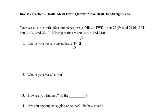Our forward drafts are 22.09 and 23.01. When we add those together we get 45 feet 10 inches.